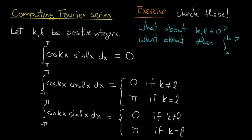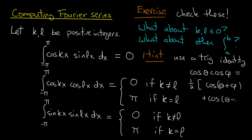I encourage you to pause the video and to do this exercise right now. If you get stuck you can come back, because I'm going to give you a hint. Use a trig identity. The trig identity that comes in handy is the product-to-sum identity for cosine: cos θ times cos φ equals 1/2 times cos(θ + φ) plus cos(θ - φ).